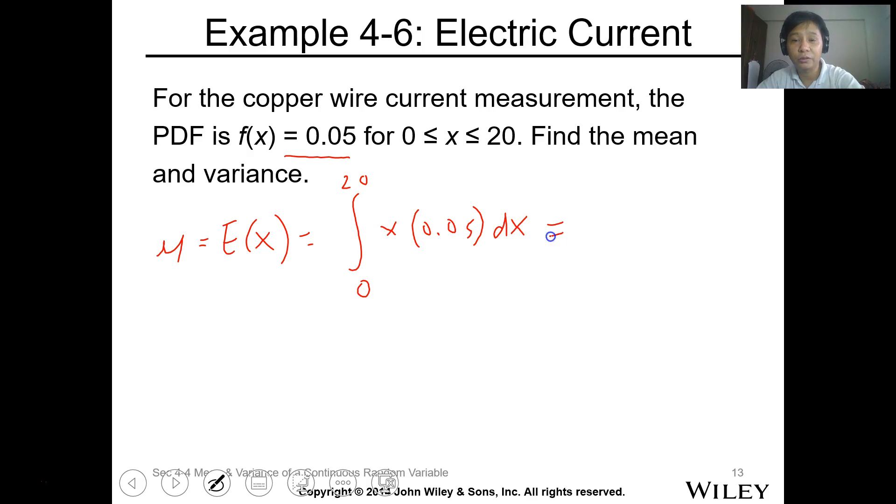Pwede itong direct sa calculator. So definite integral ng calculator, alpha ng X times 0.05 integrate from 0 to 20. Ito siya. Integration ng X times 0.05 dx from 0 to 20. Pag kinuha nyo yung integration 10. So this is 10.